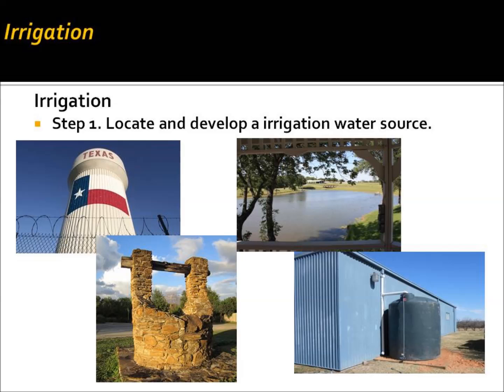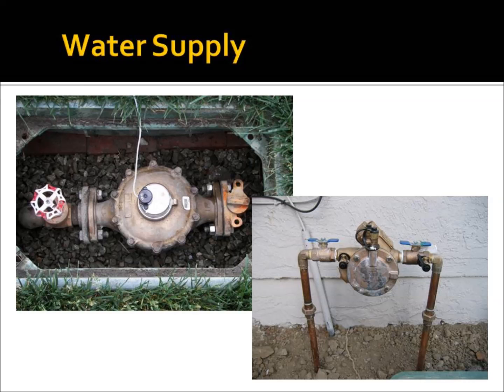The limiting factor for rainwater harvesting is storage capacity. When considering utilizing a rural or municipal water supply, it's important to consider that a backflow preventer is needed. Whenever utilizing an irrigation system in agriculture or residential use, you must use a backflow preventer. This helps to protect the water supply from being contaminated by the irrigation system, and considering that many agricultural producers utilize fertigation units, we wouldn't want fertilizers to get into the water supply.